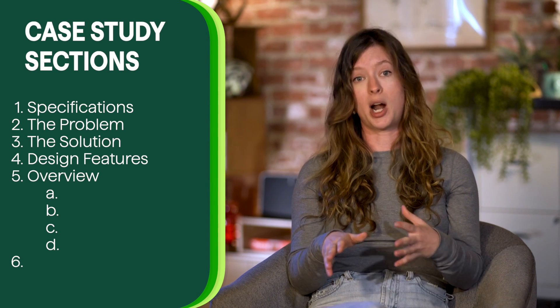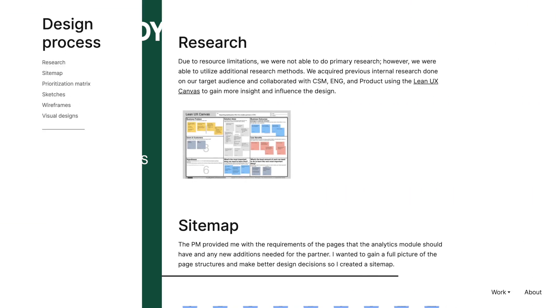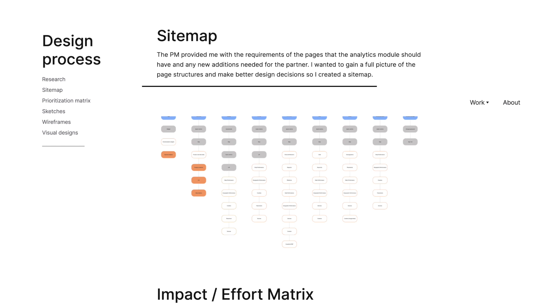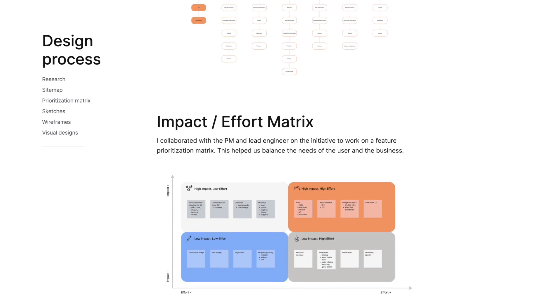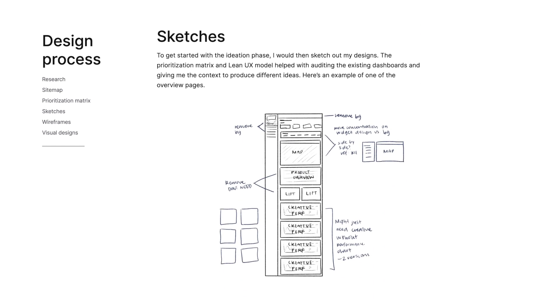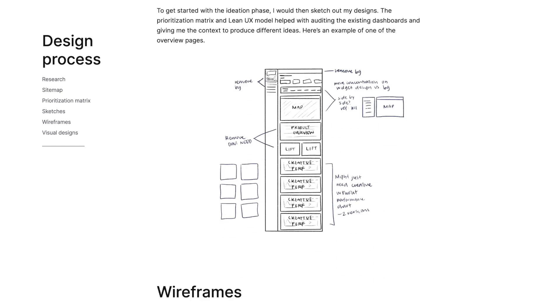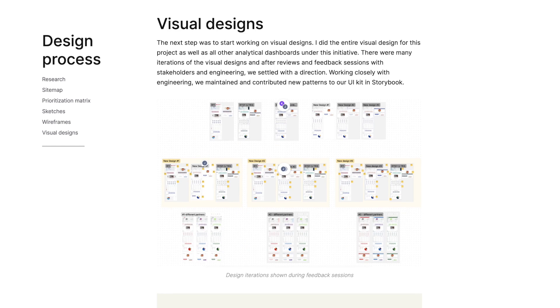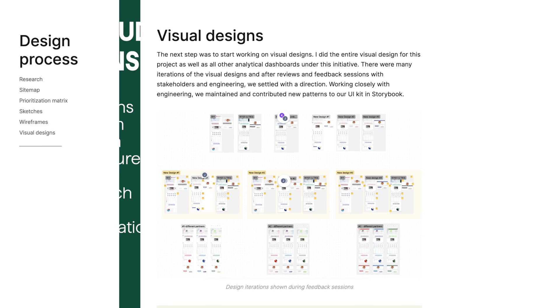Here are some design process steps you should include: research, a sitemap, prioritization matrix, sketches, wireframes, visual designs, and high fidelity mockups.